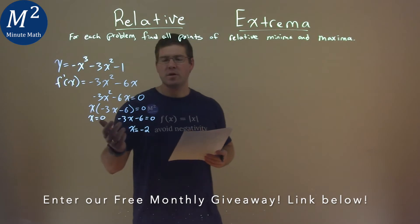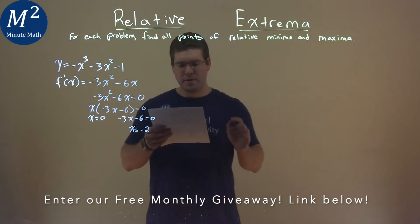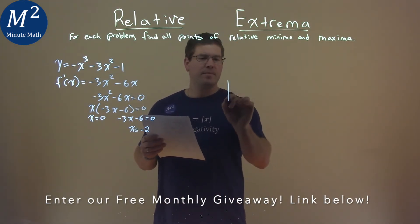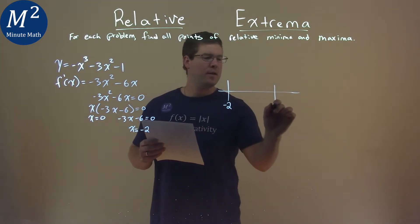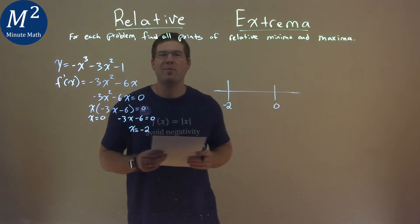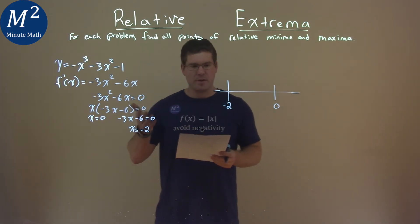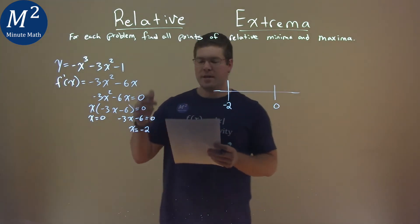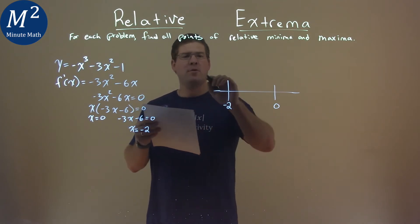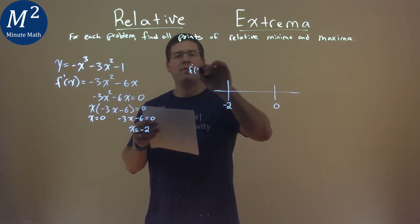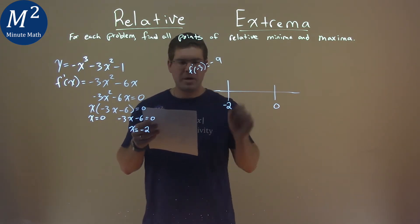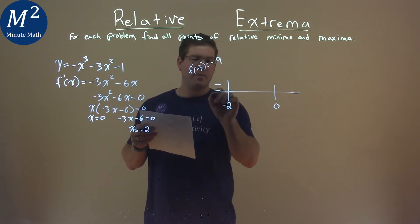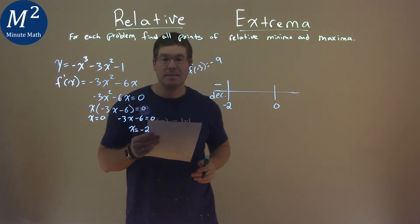So we have our two critical points. We're going to use our chart here with values negative 2 and 0. We're going to apply our first derivative test. We pick a value that's less than negative 2 and plug it into our derivative. I've picked negative 3. f prime of negative 3, when we plug it into our derivative, comes out to be negative 9. It's negative, that's what I care about, meaning my original function is decreasing.